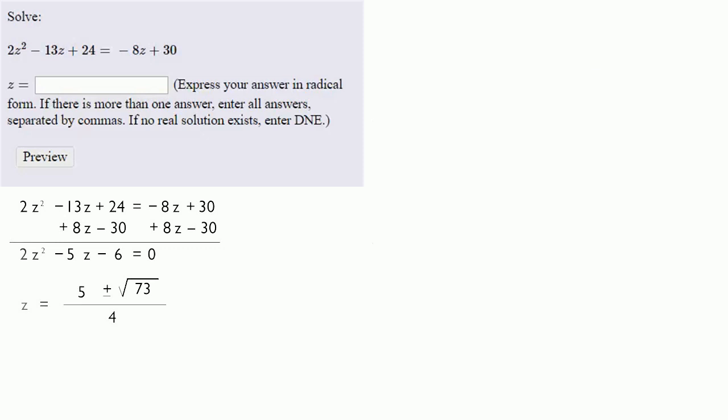Well, almost. Remember, the plus or minus in the quadratic formula means we actually get two solutions. So our actual solutions will be 5 plus the square root of 73 over 4, and 5 minus the square root of 73 over 4.